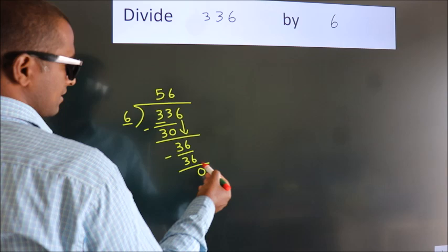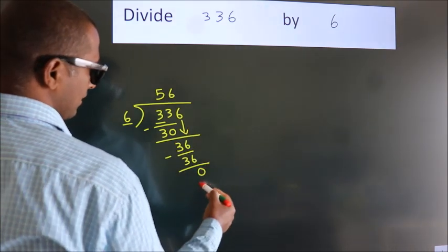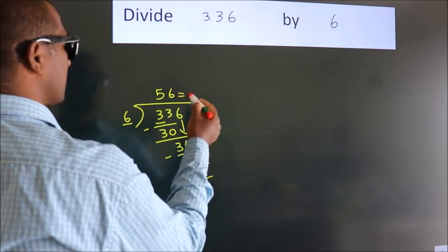After this, there are no more numbers to bring down. We got a remainder of 0, so this is our quotient.